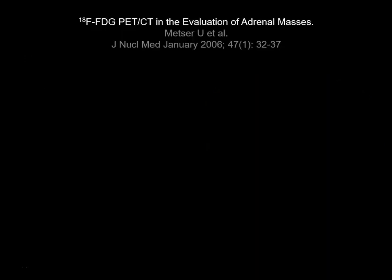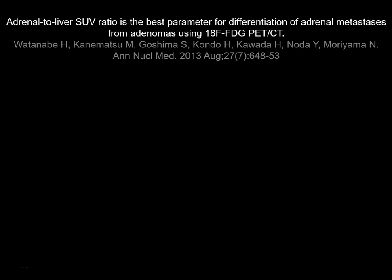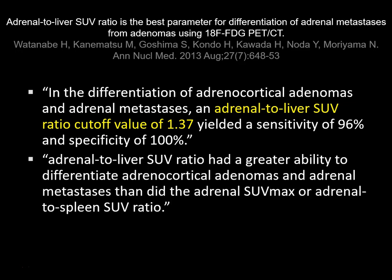We can be more specific than that. A study by Dr. Metzer evaluated malignant adrenal lesions compared to adenomas and found that an SUV cutoff of 3.1 was the most accurate predictor of whether an adrenal nodule was malignant. SUV is the standardized uptake value — a quantitative measurement of metabolic activity on PET. Another study by Dr. Watanabe compared the ratio of the adrenal-to-liver SUV and found that a cutoff value of 1.37 was 100% specific to differentiate these two adrenal abnormalities, and this ratio was more accurate than the SUV max alone or the adrenal-to-spleen SUV ratio.